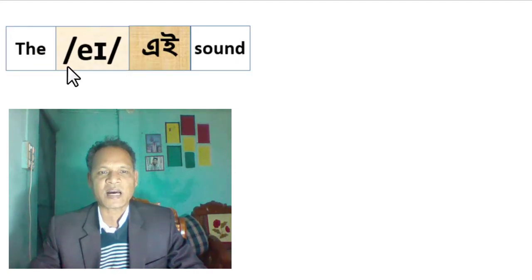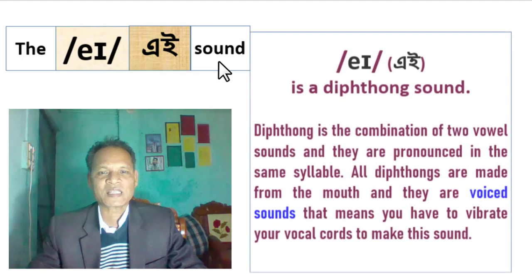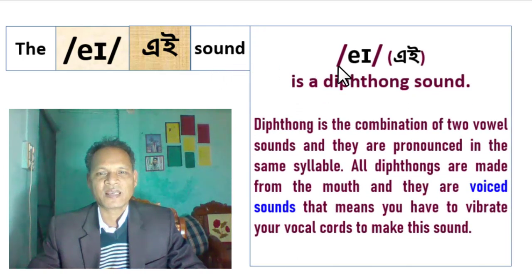This is the /eɪ/ sound. /eɪ/ is a diphthong sound. A diphthong is the combination of two vowel sounds.